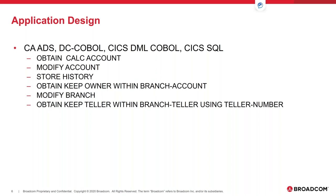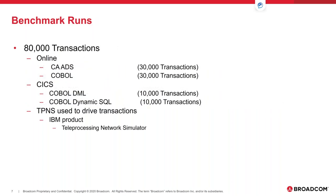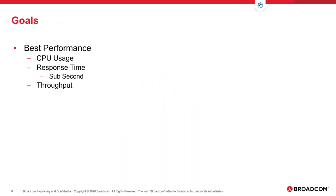For our benchmark runs, we're going to test roughly a total of 80,000 transactions. In the DC online environment, 30,000 transactions will be through ADS, another 30,000 through COBOL, and through CICS, 10,000 will be through COBOL DML and another 10,000 through COBOL dynamic SQL. Those transactions will be simulated through TPNS — the IDMS Teleprocessing Network Simulator. The performance goals for this session are: lower CPU usage, obtain sub-second response time, and achieve the highest possible throughput.